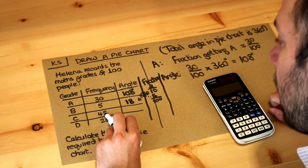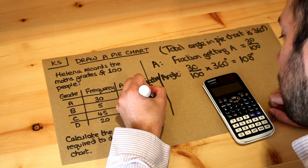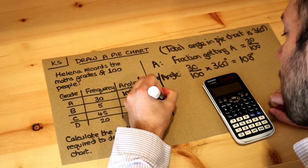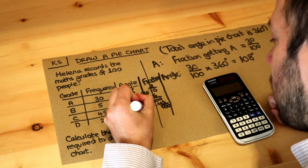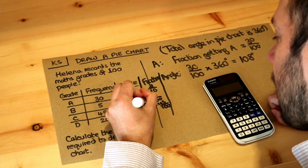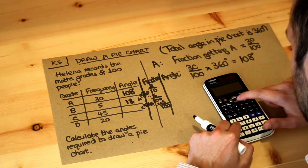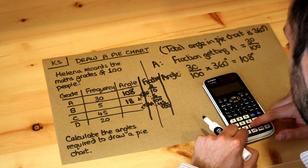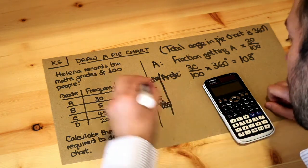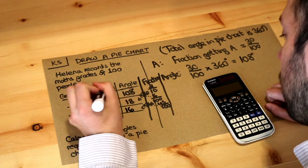The next one, it's 45 out of 100 people, so 45 hundredths. And then again we times this by 360 to do that fraction of the full angle, the total angle of 360. So 45 over 100 multiplied by 360, and that is 162 degrees. So quite a lot.